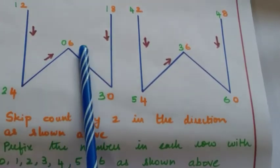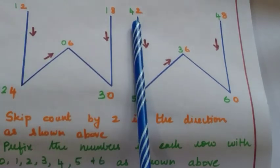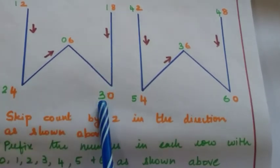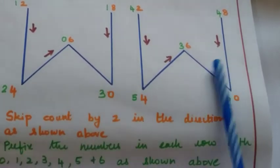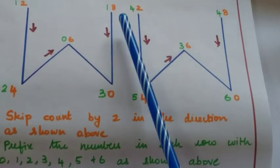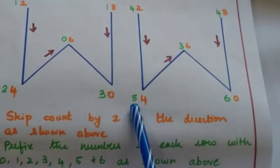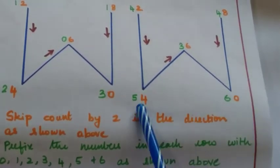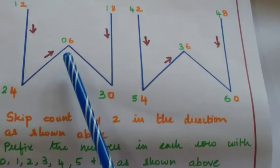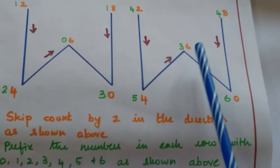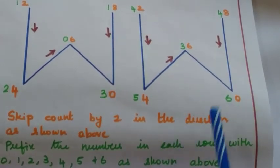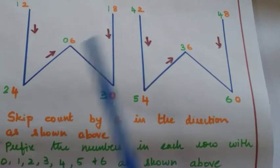Start from the middle of the first W and prefix it with 0 and 1 in that row, then 2. When you see a 0, increase the 2 by 1 to write 3. For the next W, start from the middle with the same number, increase it by 1, then again increase by 1. When you see a 0, increase 5 by 1 to write 6. You then obtain the results of table 6: 6, 12, 18, 24, 30, 36, 42, 48, 54 and 60. The two concepts to remember are skip counting by 2 and prefixing the numbers in the correct order.